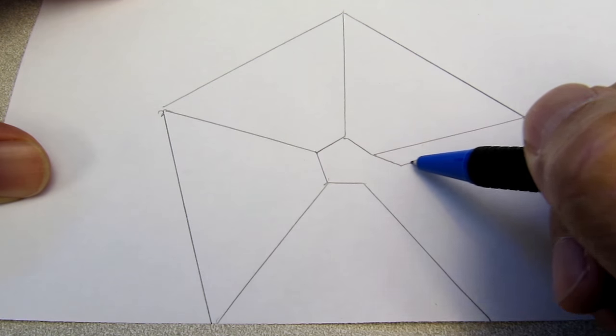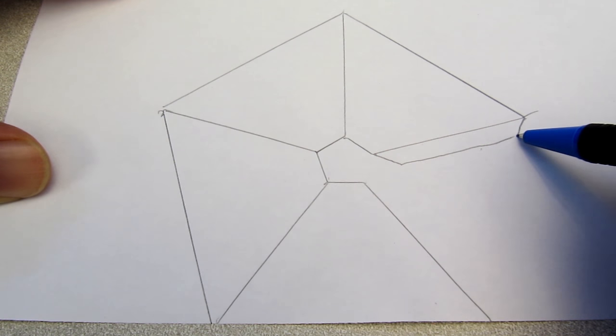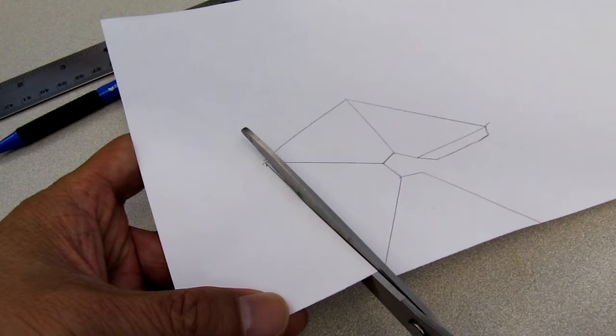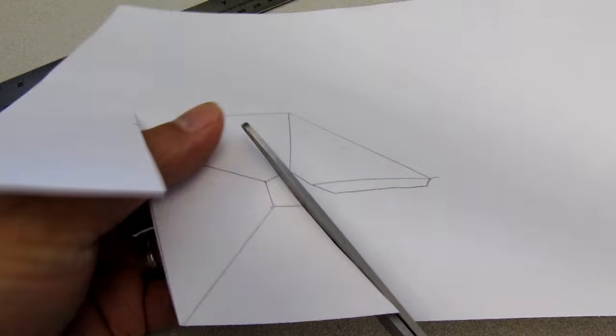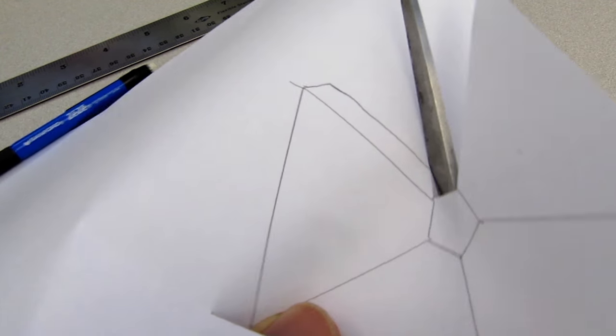On this open edge I'm going to draw a little tab here. Now it's time to cut out our main template. Just follow the outside lines and cut the entire shape out.